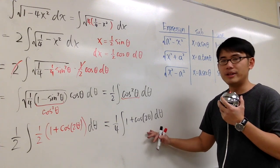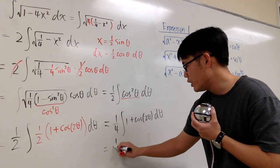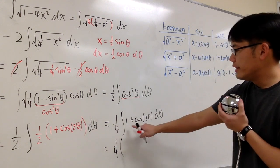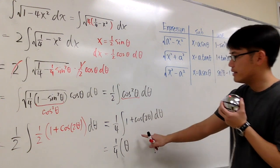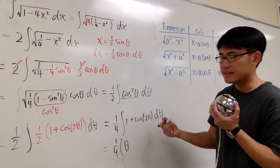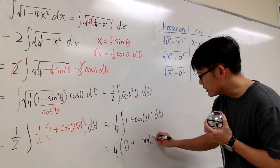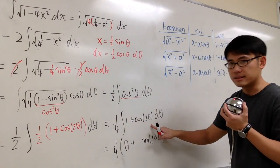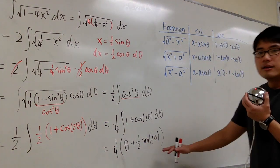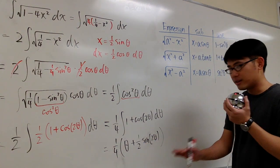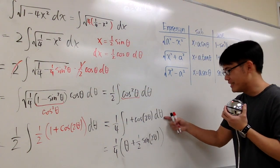We integrate to get 1/4 times [θ + (1/2)sin(2θ)] — the integral of 1 is θ, and the integral of cos(2θ) is sine(2θ) divided by 2. So we multiply by 1/2, giving plus (1/2)sin(2θ). That's the integration part done.